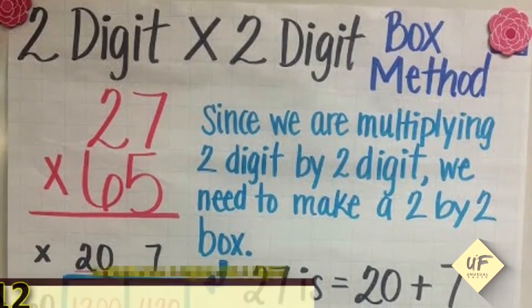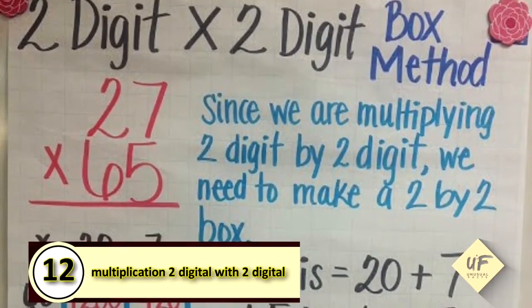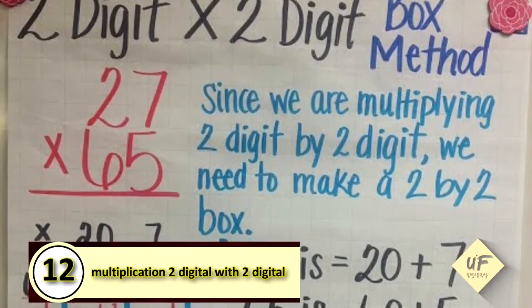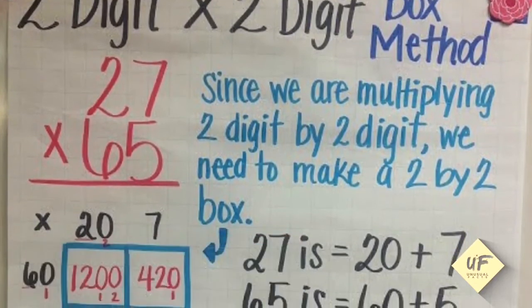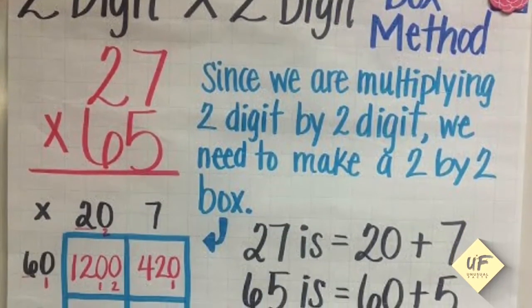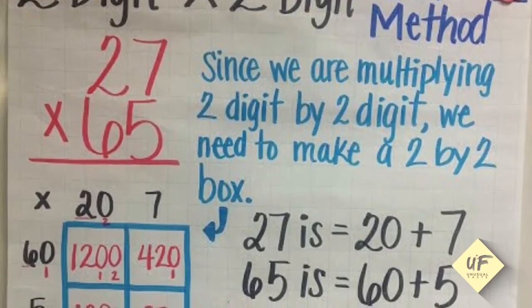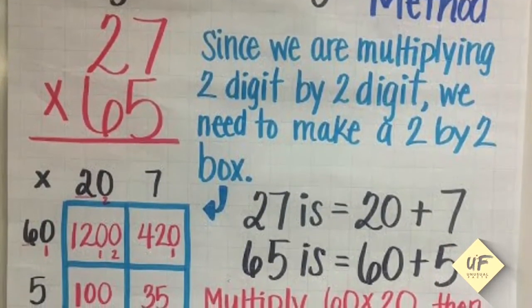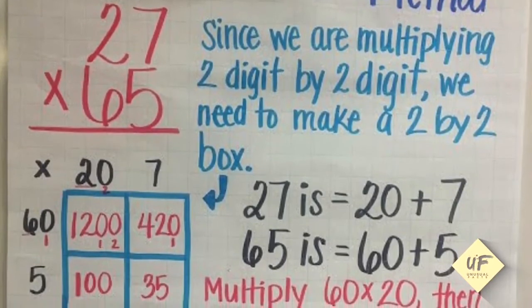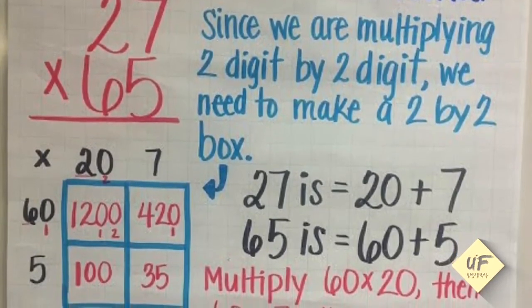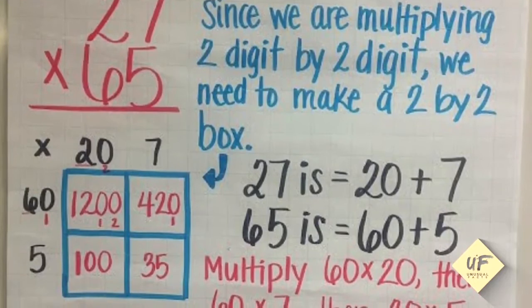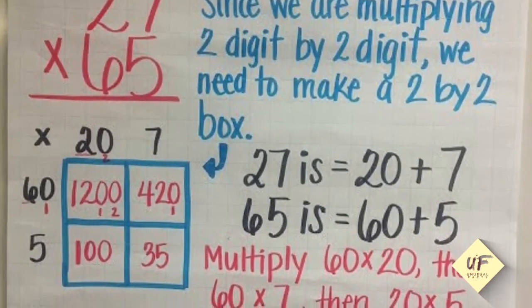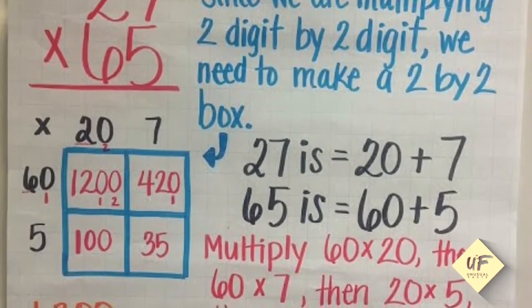Tip number 12: multiplication, two-digit by two-digit. Here we'll use the box method. 27 times 65. Since we're multiplying two digits by two digits, we need to make a two-by-two box. So you break it down: 27 is 20 plus seven, and 65 is 60 plus five. See how it's laid out here?